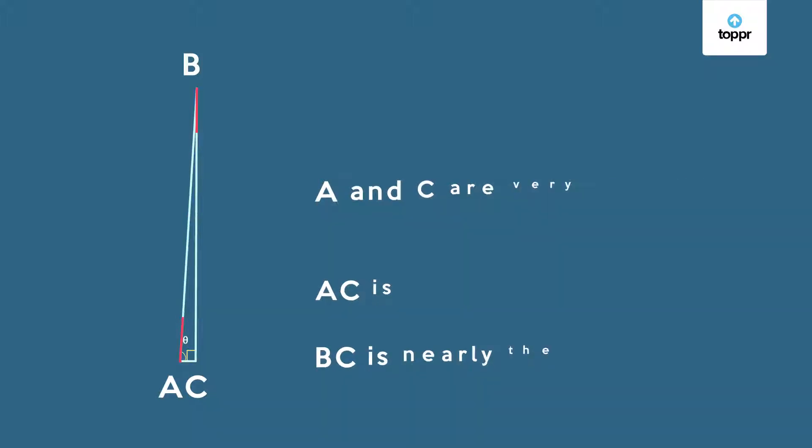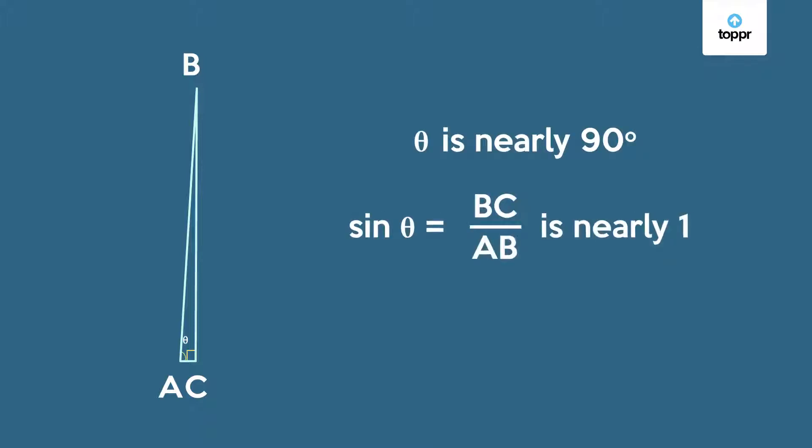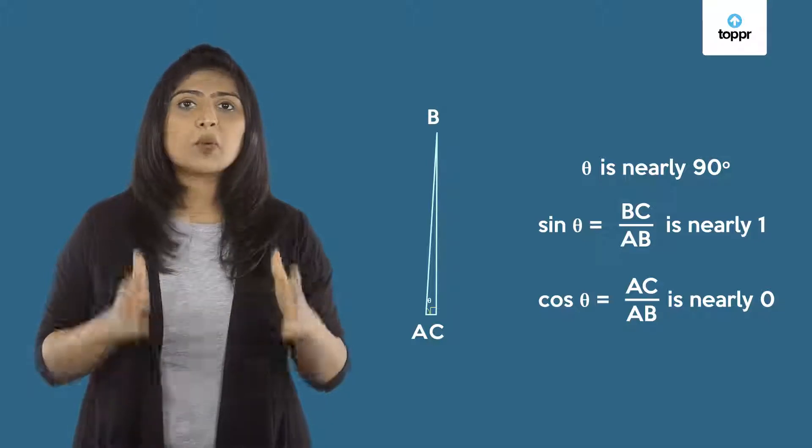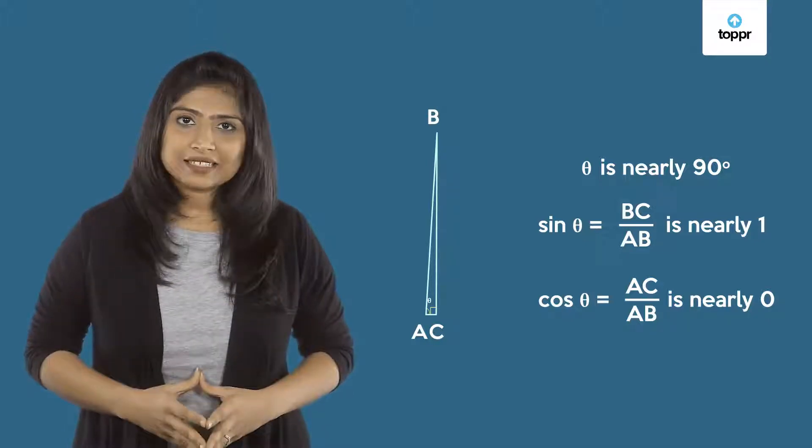Using these facts we can determine the approximate values of sine theta and cos theta when theta is nearly 90 degrees. So we've seen how the sine and cosine behave when theta is close to 90 degrees.